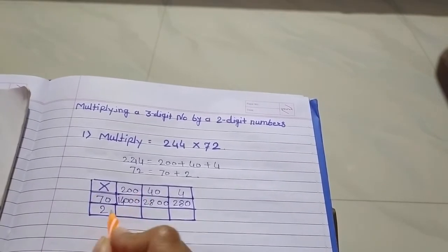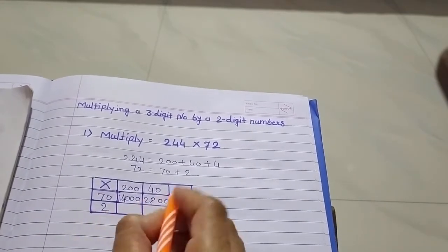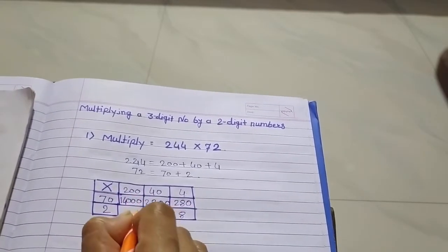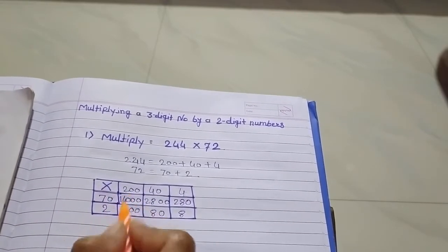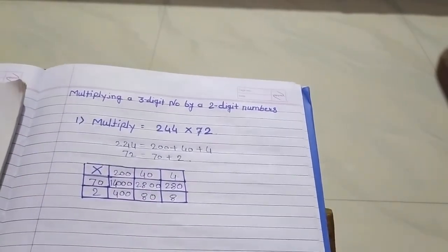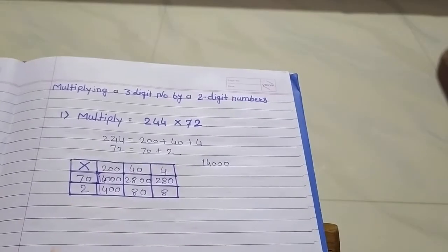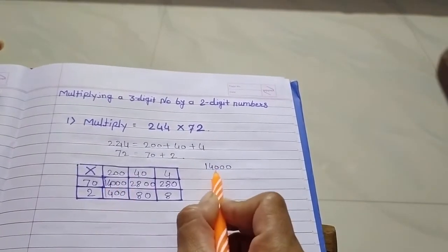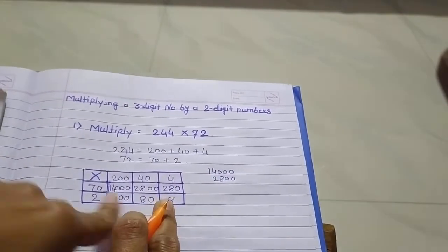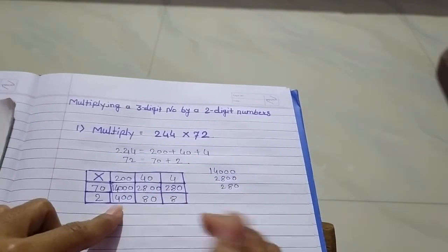Then ab two se karna hai multiply. Two fours are eight. Then two zero zero — two fours are eight. Teer say two zero zero, two zero zero. Then two twos are four. Ab yeh toh humne answer nikaal liya. Ab inke jo box mein aaye hue answers hain, unki hame kya karna hai? Addition.